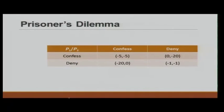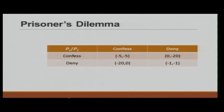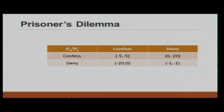Let us take an example from the Prisoner's Dilemma. Confessing is a strictly dominant strategy — no matter what the other player is doing, confessing is better than denying. As confess is strictly dominant, deny is strictly dominated: no matter what the other player does, denying is worse than confessing. We have to be careful about this distinction.